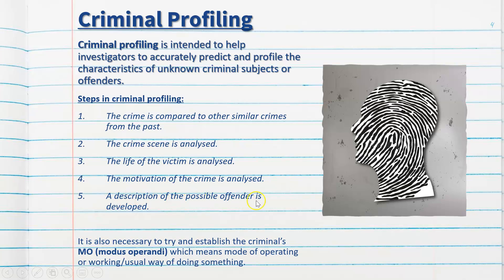A description of the possible offender is developed, which is the last and most important step. In certain instances, criminal psychologists won't be able to come up with a complete profile, but they'll gather as much information as possible from the crime scene in order to narrow down the search.